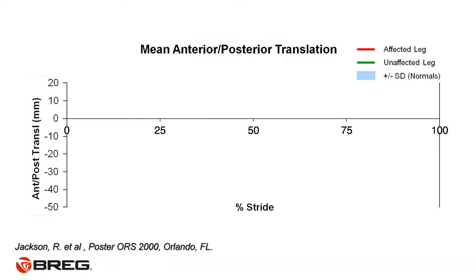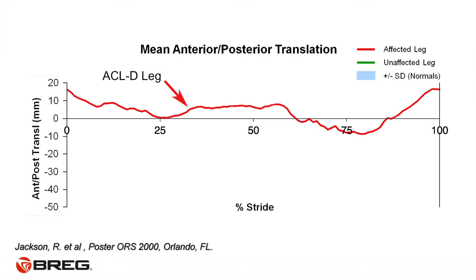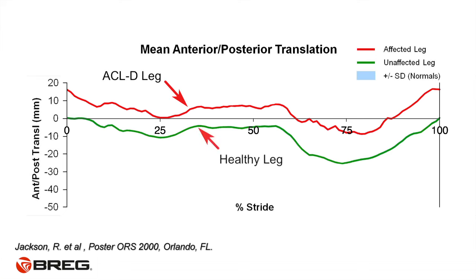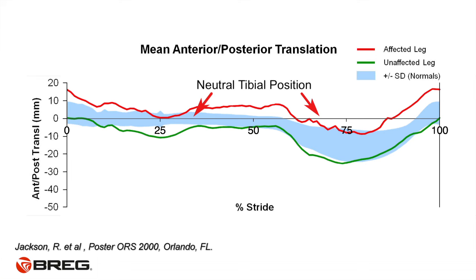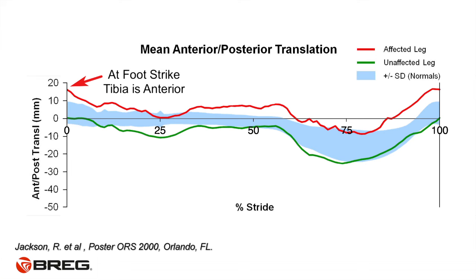This particular graph shows one patient walking through one complete gait cycle. The red line shows the gait cycle of the patient's ACL-deficient leg; the green shows the same patient's healthy leg. On the left, the vertical line represents one foot strike. On the right, the second vertical line shows the next foot strike after one complete gait cycle. The horizontal line in the middle is the neutral tibial position. Note at foot strike, the red line shows the tibia is anterior.